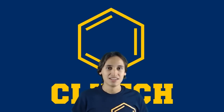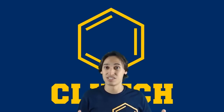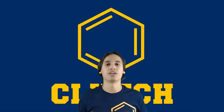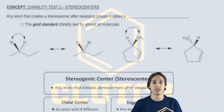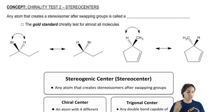So this brings us to test two. We're going to need some kind of reliable way to tell if molecules that aren't rings are chiral or not. We know that the internal line of symmetry test — test one — is crap for chains and branches and stuff like that. So we're going to need some kind of test. And it turns out I have just the thing: we're going to talk about stereocenters. This test is actually going to be the gold standard for most molecules.